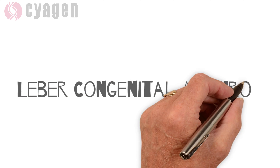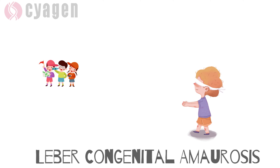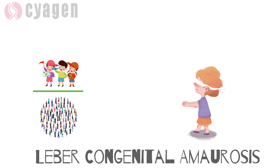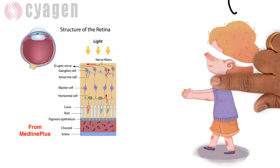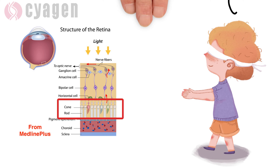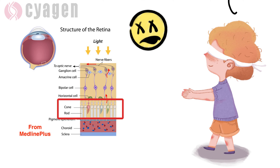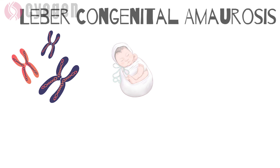Leber congenital amaurosis is the most common cause of inherited childhood blindness, with roughly three out of 100,000 children around the world affected by the disorder. With similarities to retinitis pigmentosa, children born with LCA have light-gathering cells like rod cells and cone cells of the retina that do not function properly.